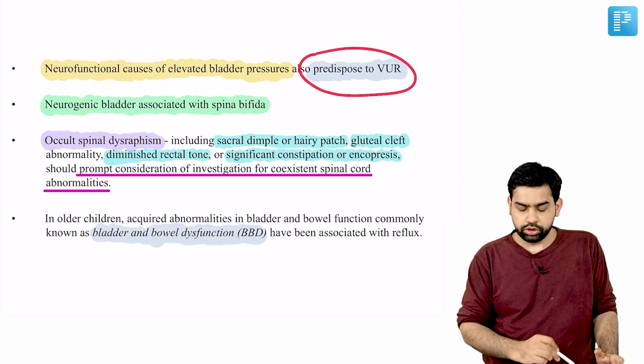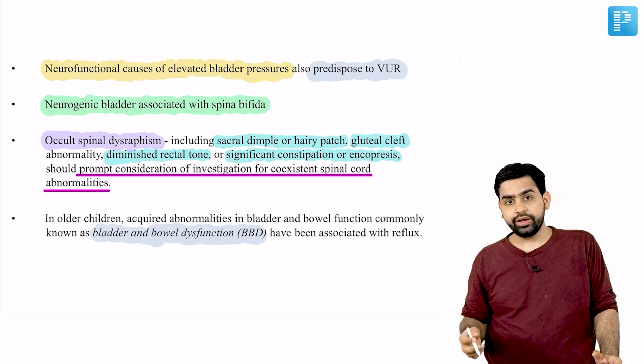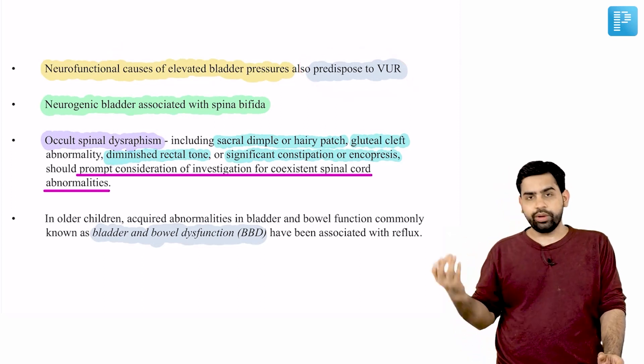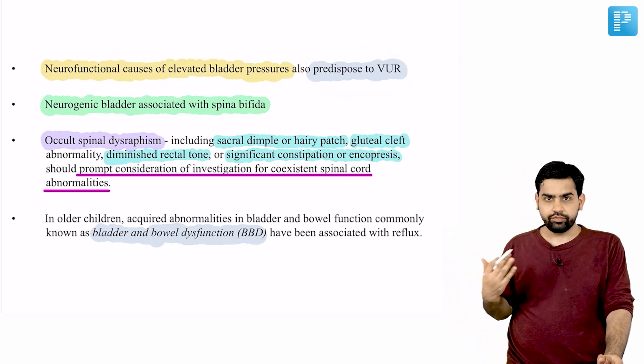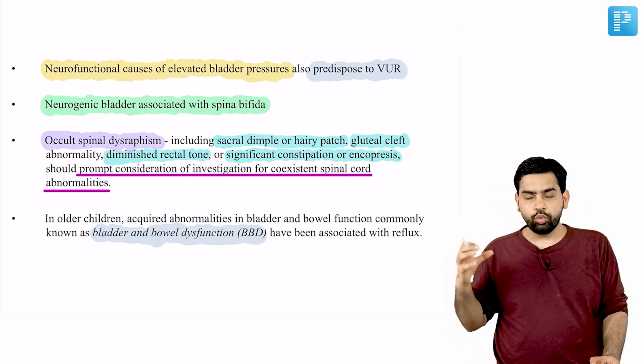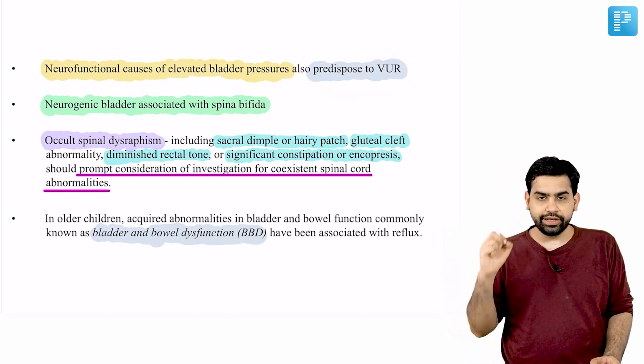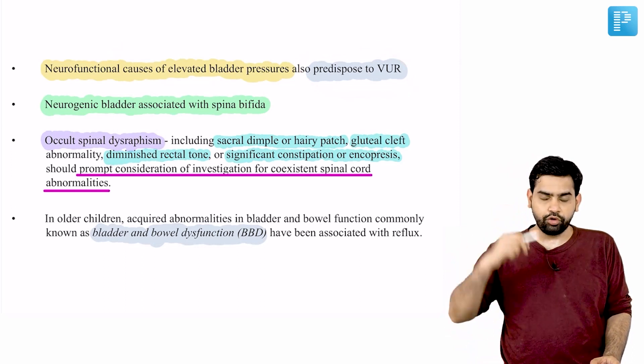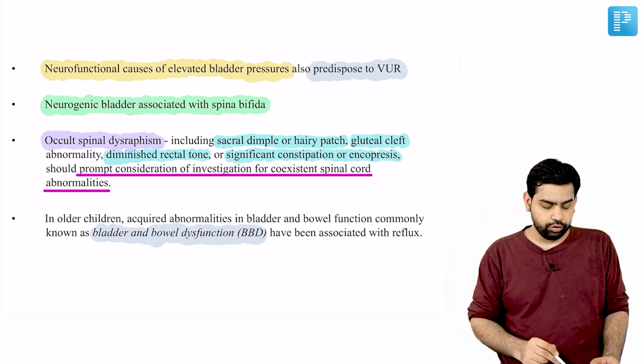Neurofunctional causes of elevated bladder pressure also predispose to VUR. Overactive bladder is a contributory factor for secondary VUR.